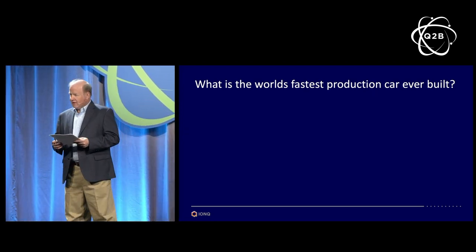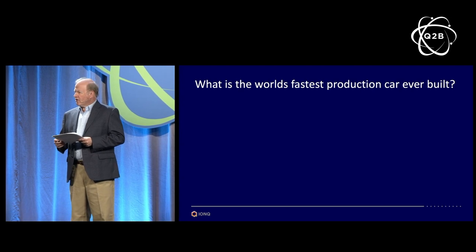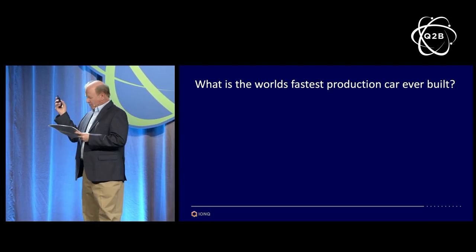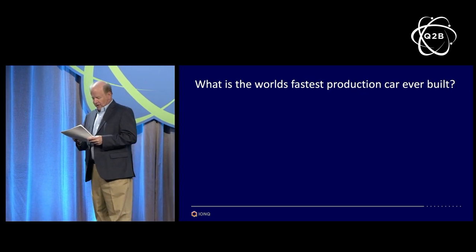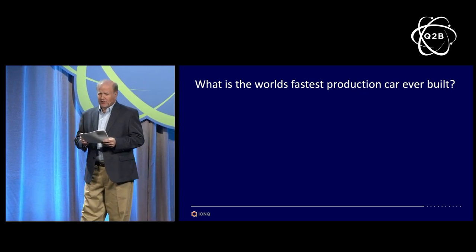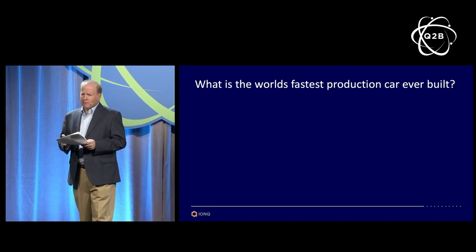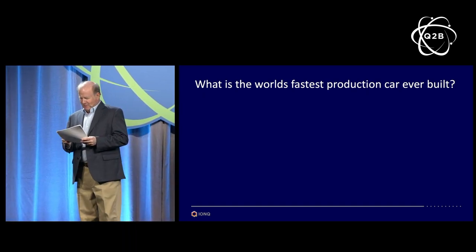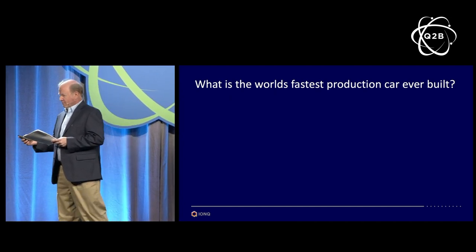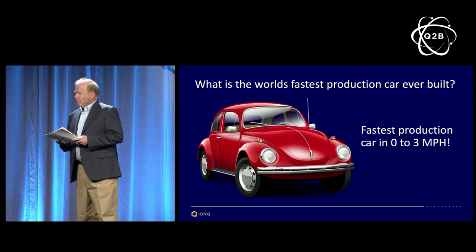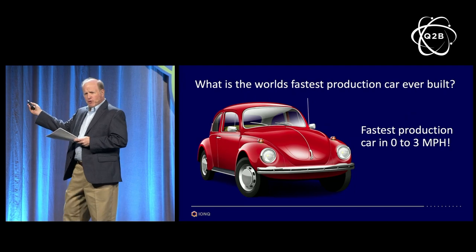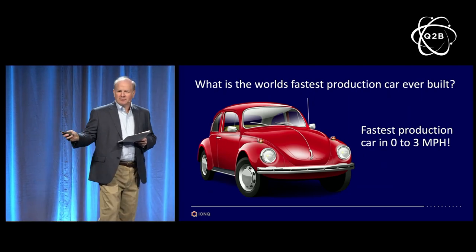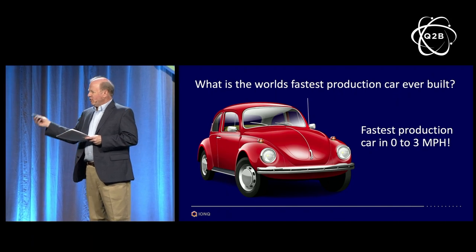One of the problems here is what I would call the art of lying by telling small truths to give a picture which is actually misleading. For example: what is the fastest production car ever built? The surprising answer, up to the introduction of a Tesla, was a VW Beetle. It turns out zero to three miles per hour, this thing cannot be beat — it's the fastest production car on the planet. It's a stat which is true, but it's totally misleading.